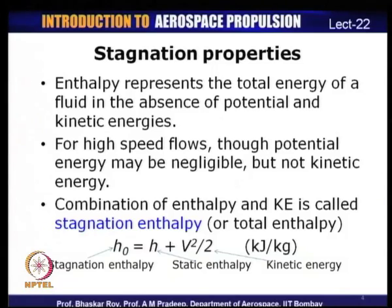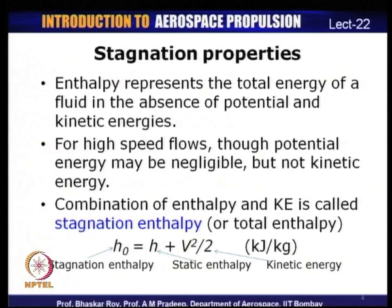The first term on the right is the static enthalpy (no subscript 0) and the second term is the kinetic energy. So stagnation enthalpy is the sum of static enthalpy plus kinetic energy. In compressible flows we define properties as both stagnation and static parameters. Static parameters become stagnation parameters when velocity is zero — i.e., when kinetic energy is zero, static and stagnation properties are the same.